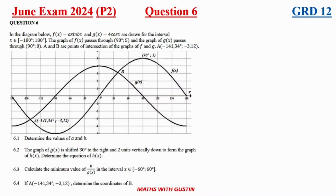Let's have a look at Question 6. In the diagram, f(x) = a·sin(bx) and g(x) = 4cos(x) are drawn for x in the interval negative 180 to 180 degrees. The graph of f(x) passes through the point (90, 5) and g(x) passes through (90, 0). Points A and B are the intersections of the two graphs, where A is given by specific values shown in the diagram.